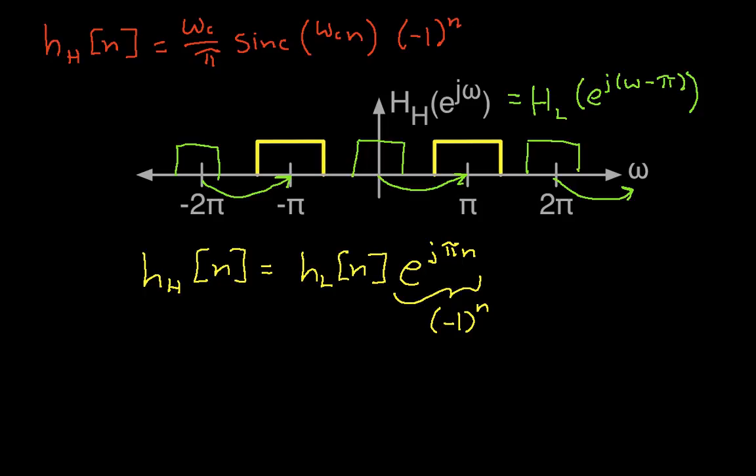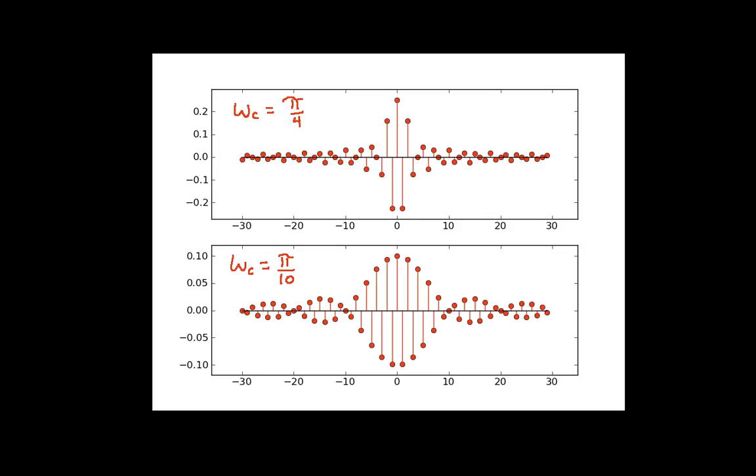And when I plot this, I get something that looks like this. So you can see that the envelope, that is the magnitude if you will, of the impulse response stays the same, but the sign of every other sample is different. So I go positive, negative, positive. This is negative of what it would normally be, and so on. Basically, the sign of everything is flipped.